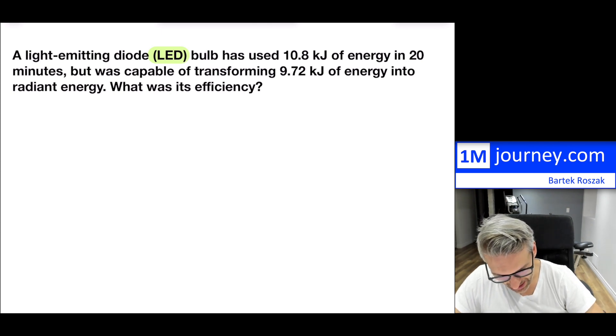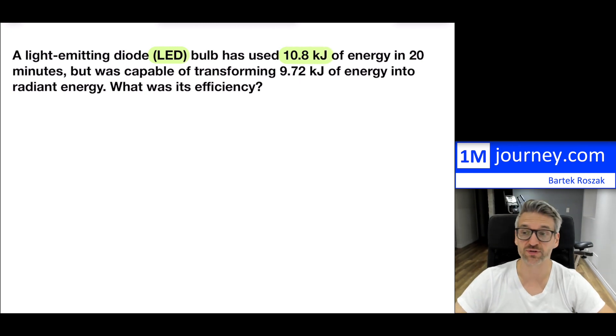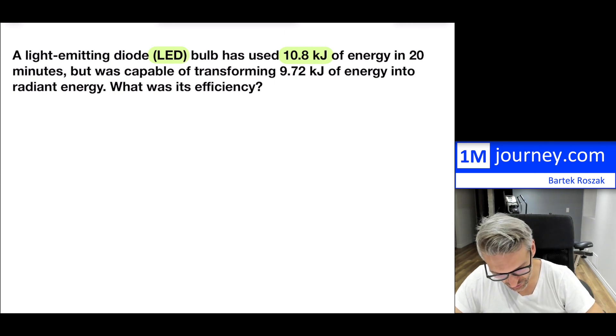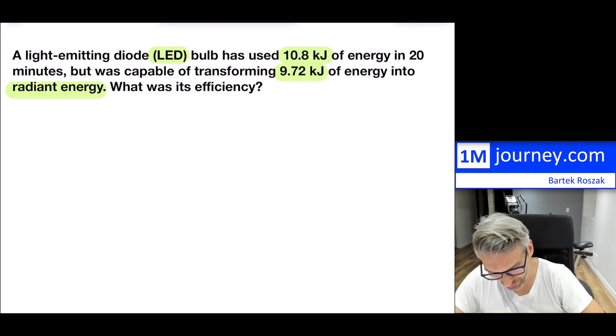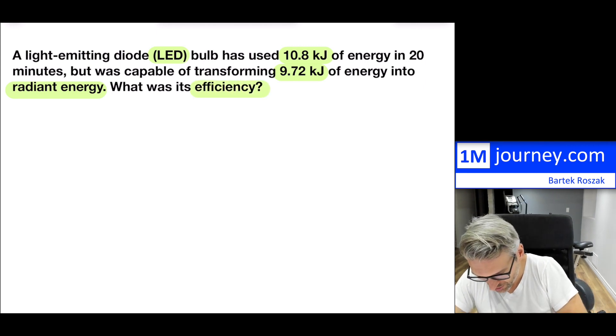It's not that you have to know what exactly causes that transfer of electrical energy to basically radiant energy or light energy, but this is a different technology that we use. And nowadays, more and more people are utilizing this in terms of their lighting bulbs. So in a light emitting diode, notice that it utilizes 10.8 kilojoules in the same amount of time, in 20 minutes, so a lot less. It's about a sixth. Now, let's take a look and see that it is capable of transforming 9.72 kilojoules of energy into radiant energy.